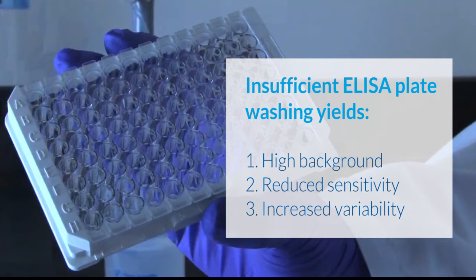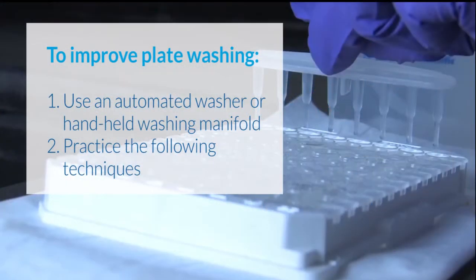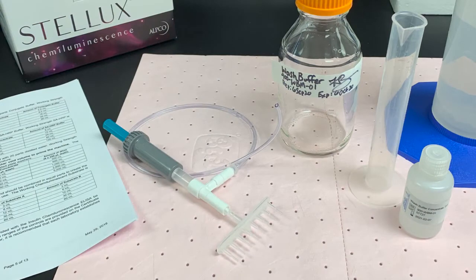A handheld pipetter should not be used to wash plates. Instead, it's recommended to use an automated plate washer set to 300 microliters per well or a handheld washing manifold. Prepare wash buffer as specified in your protocol.